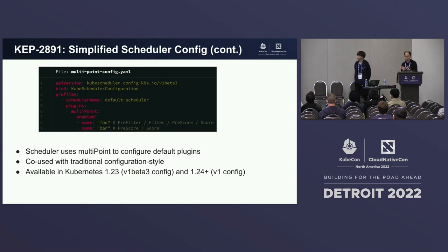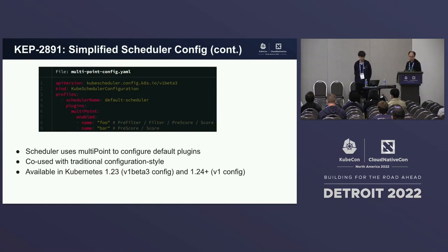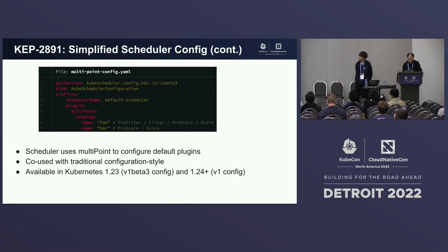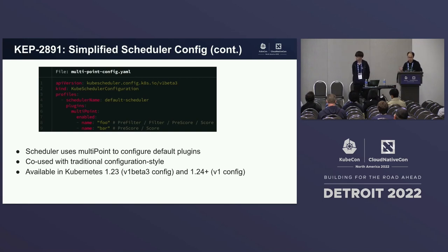To make this more user-friendly, we introduced the multipoint extension point. Instead of specifying individual extension points, you simply list plugin names under the multipoint section — you just tell the scheduler you want to enable 'foo' and 'bar'. Internally, it uses a reflection-based mechanism to detect which extension points each plugin implements and enables them automatically. This is available in Kubernetes 1.23 with V1Beta3 config and later with V1 config. The old-style configuration still works and can be mixed with the new style.